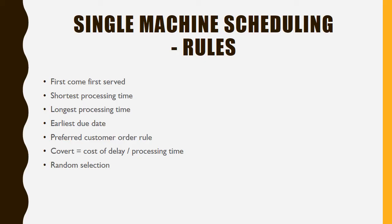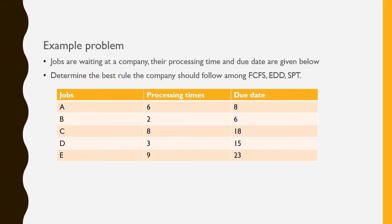Now we will discuss a specific problem. We follow some rules and find out which rule is best suited for the company. There are five jobs — A, B, C, D, E — with processing times: A takes 6 days, B takes 2 days, C takes 8 days, D takes 3 days, and E takes 9 days. The due dates are: A = 8 days, B = 6 days, C = 18 days, D = 15 days, and E = 23 days.